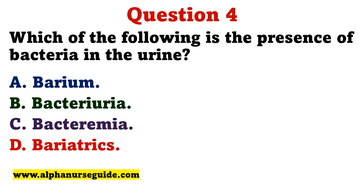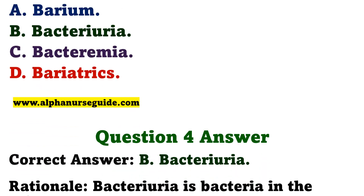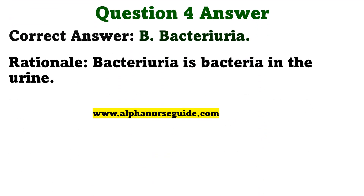Which of the following is the presence of bacteria in the urine? A: Barium. B: Bacteriuria. C: Bacteremia. D: Bariatrics. The correct answer is B, Bacteriuria. Bacteriuria is bacteria in the urine.